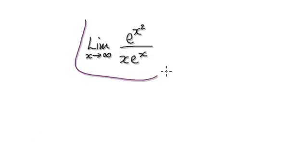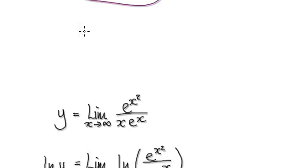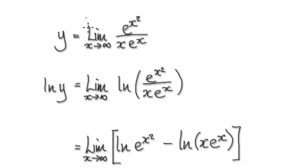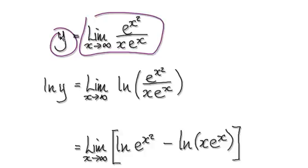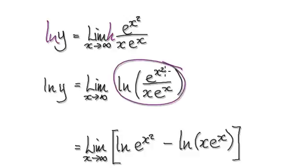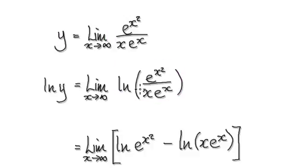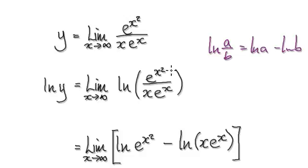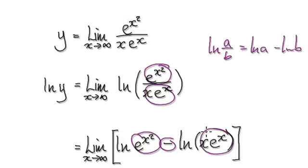Let's say the whole limit here is y. Now take the natural log of both sides — log this, log this. That will then take you to this expression here. Remember, the natural log of a over b is the same as log of a take away log of b.